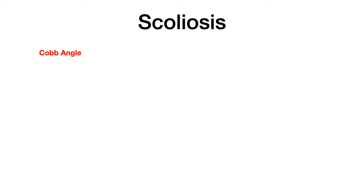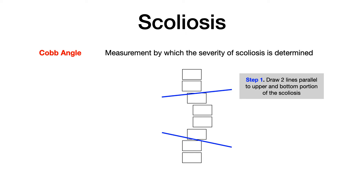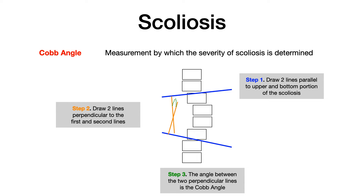The Cobb angle is probably the most high-yield discussion in this entire lesson — it is the measurement by which the severity of scoliosis is determined. To calculate it: step one, draw two lines parallel to the topmost and bottommost portion of the curved section of the spine, shown here in blue. Step two, draw perpendicular lines at 90-degree angles to those first lines, shown here in orange. Step three, calculate the angle where those two perpendicular lines intersect — that angle, shown here in green, is the Cobb angle.